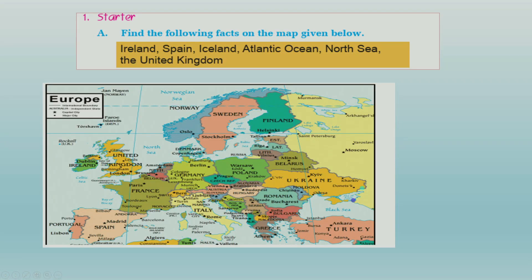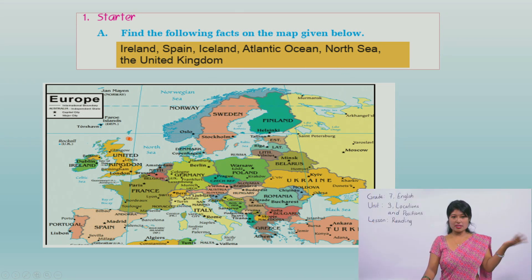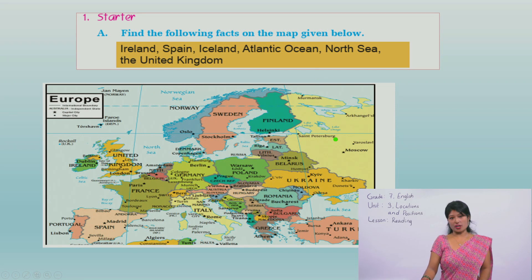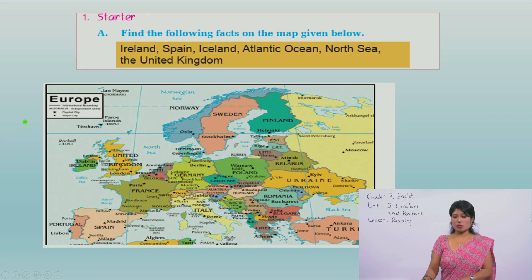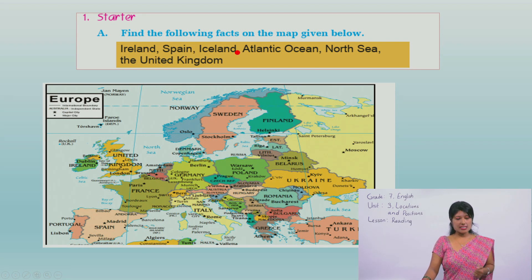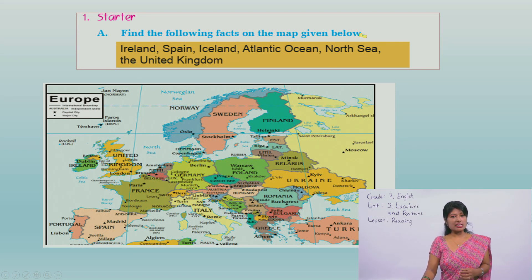Look at this map. You can see a map - can you recognize this map? What is it? Which map is it? Of course it is written 'Europe' here. It is a map of Europe. In this activity, number 1, Starter A: find the following facts on the map given below. We have to find Ireland, Spain, Iceland, Atlantic Ocean, North Sea, and the United Kingdom.